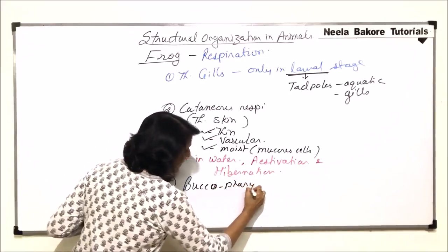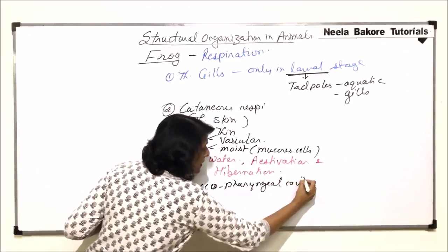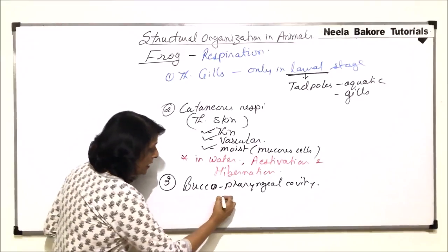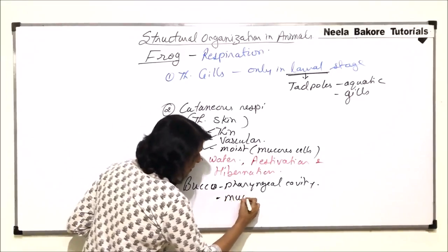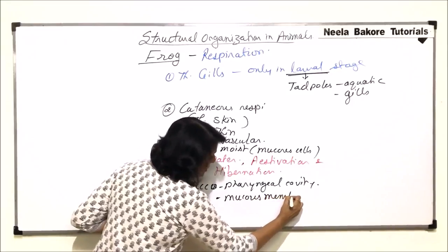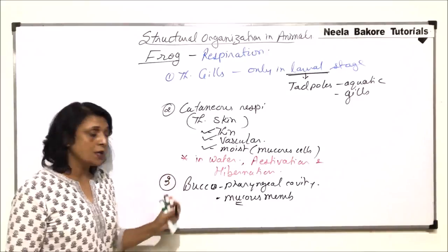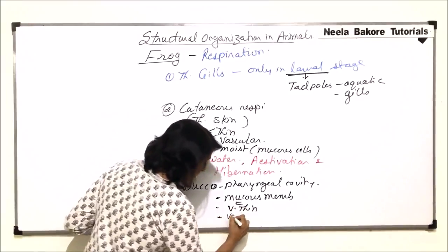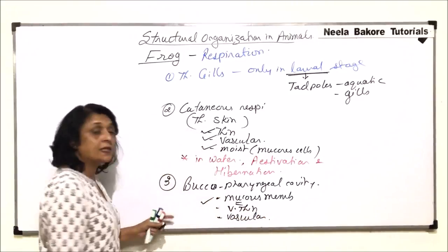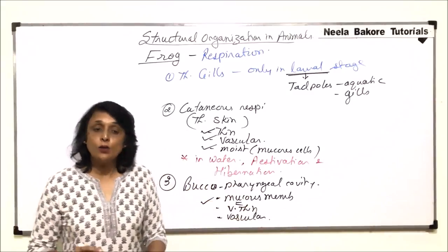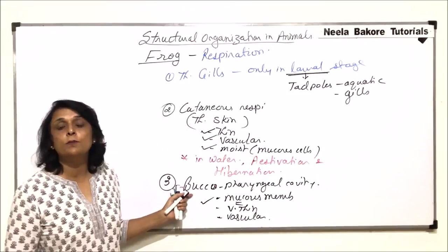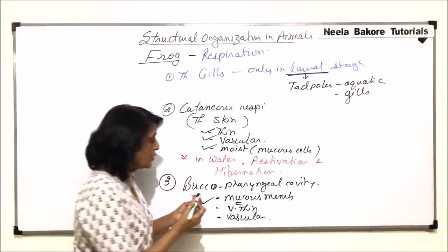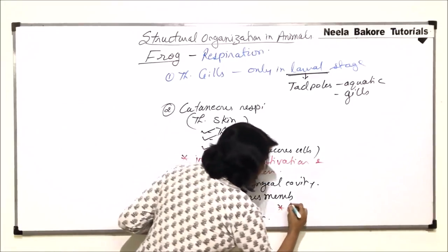The third mechanism is through the buccal pharyngeal cavity — the space in the buccal cavity and pharynx region. Here, the membrane is a mucus membrane, which means there are glands and the membrane is moist. It is also very thin and highly vascular. This means this area also helps in gaseous exchange. This is possible when the frogs are on land and they are able to inhale air, so this respiration is seen when they are on land.